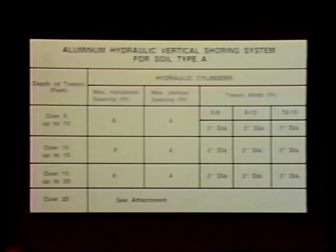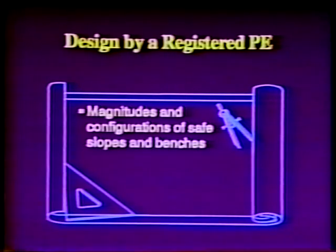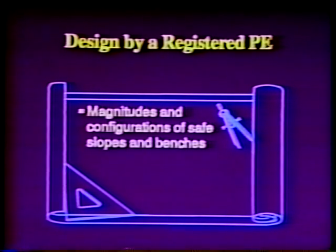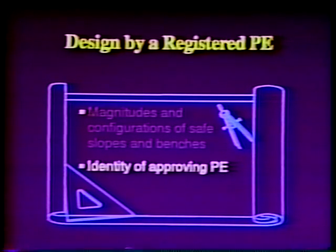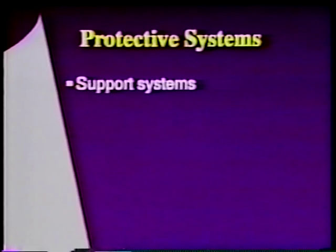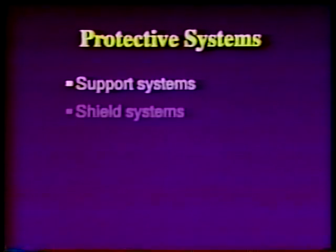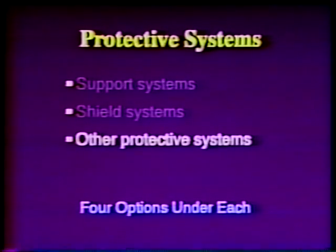The fourth option involves design by a registered professional engineer. Designs must be in written form and must include the magnitudes and configurations of slopes and benches determined to be safe for the project, as well as the identity of the approving PE. The second category of protective systems prescribed by OSHA to protect employees from cave-ins involves the use of support systems, shield systems, and other protective systems.